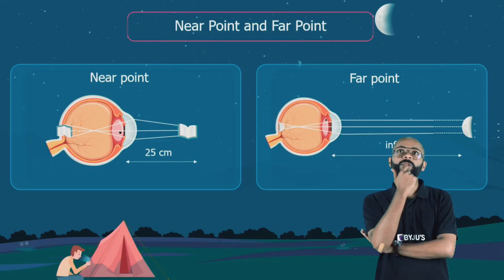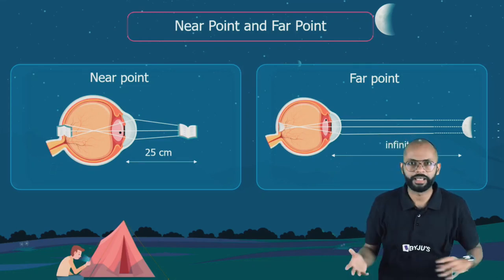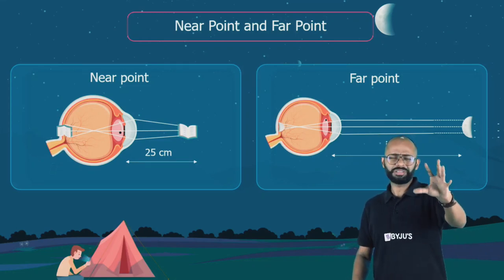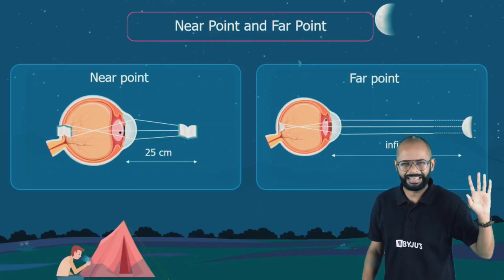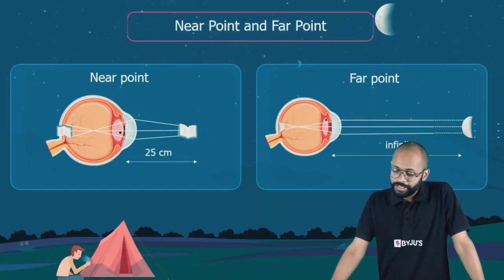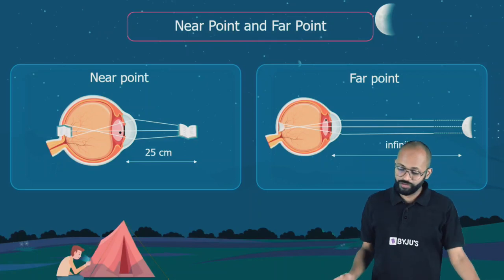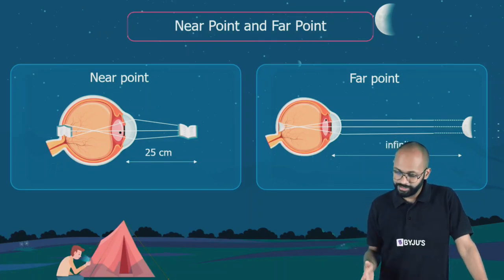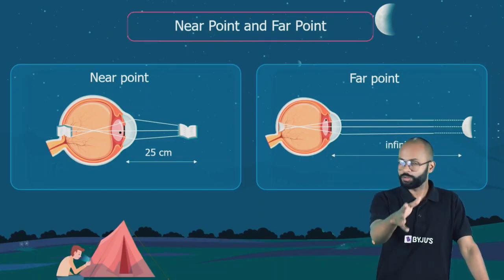If you decrease the distance, if you bring it closer than 25, you will have trouble in seeing that object. Near point is the nearest point up to which the eye can see an object clearly, without any strain, 25 centimeters. Far point kya hota hai? Bohut door. Infinite. In simple language, whenever you see very far, it's called infinity. So far point is the farthest point from the eye which an object can be clearly seen.